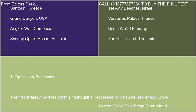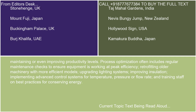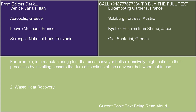The first strategy involves optimizing industrial processes to consume less energy while maintaining or even improving productivity levels. Process optimization often includes regular maintenance checks to ensure equipment is working at peak efficiency, retrofitting older machinery with more efficient models, upgrading lighting systems, improving insulation, implementing advanced control systems for temperature, pressure, or flow rate, and training staff on best practices for conserving energy. For example, a manufacturing plant that uses conveyor belts extensively might optimize their processes by installing sensors that turn off sections of the conveyor belt when not in use.